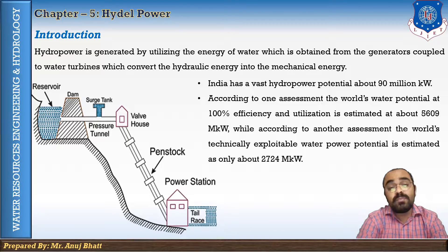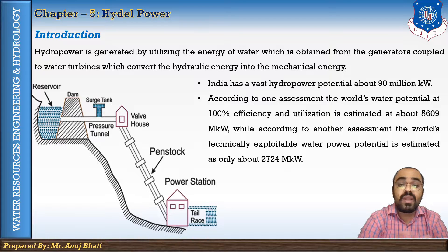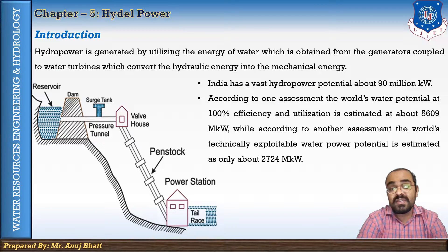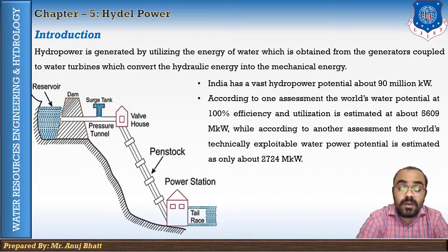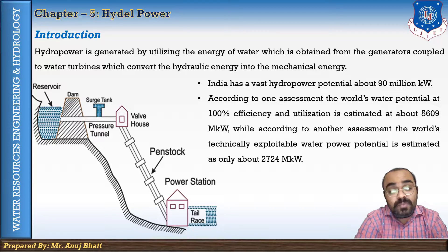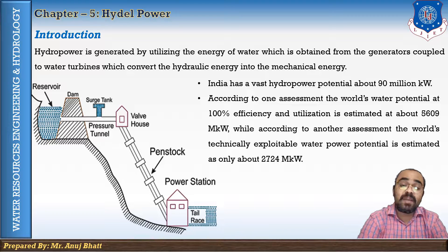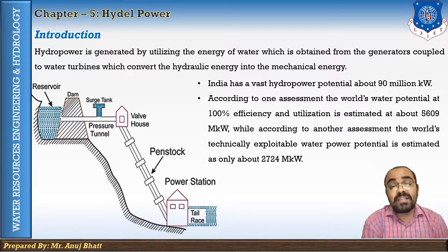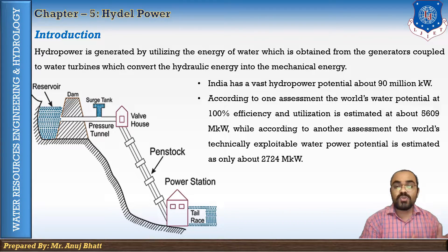There is still a vast scope for future development because about 78 percent of the potential is still untapped. According to an assessment, the world water potential at 100 percent efficiency is estimated at about 5,609 million kilowatt. The world's technical exploitation for water power potential is estimated at about 2,724 million kilowatt. The world's hydroelectric installed capacity is up to 200 million kilowatt, which is about nine percent of that assessment.